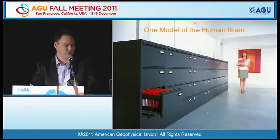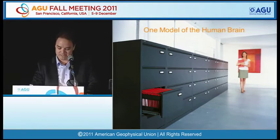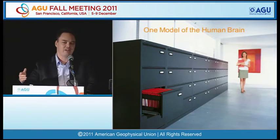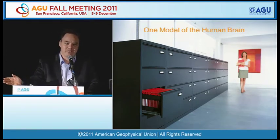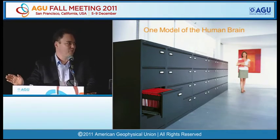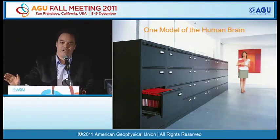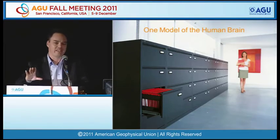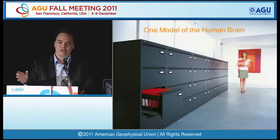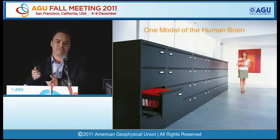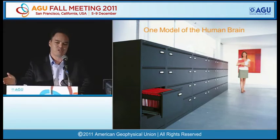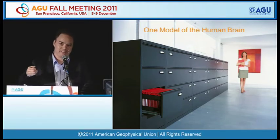When I started SkepticalScience and started writing these rebuttals of climate myths, the way I thought about the human brain was essentially the information deficit model. When I went to debunk a myth, I thought of the mind as a well-ordered office with well-organized filing cabinets — I would open up a file, take out the misinformation, and then add all the evidence that debunked it, and if that wasn't quite effective I'd just add more evidence until the job was done.